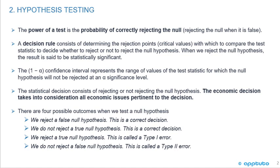Three, we reject a true null hypothesis, reject when true, or RT. This is called a Type I error. Four, we do not reject a false null hypothesis, fail to reject false, or FF. We call that a Type II error.